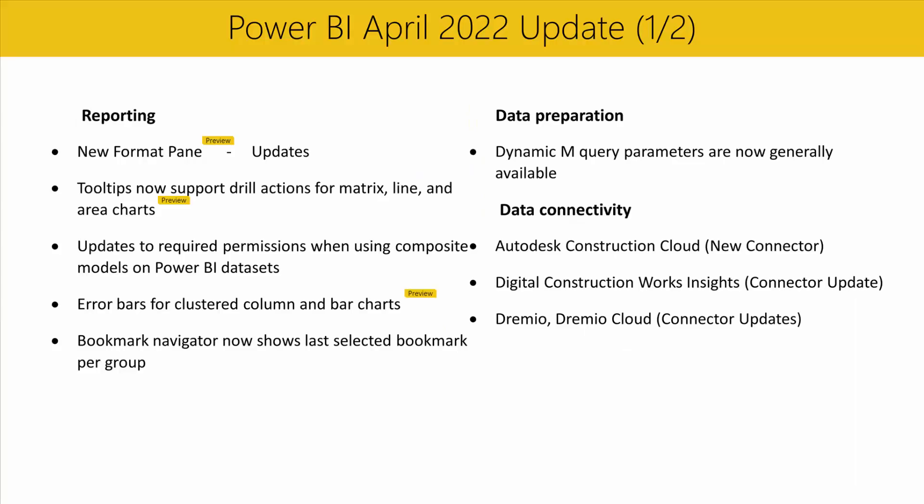In the data preparation section, we're excited to announce that dynamic M query parameters are now generally available. This feature allows report viewers to dynamically set the values for an M query parameter using filters or slicers, which is especially useful for query performance optimizations without sacrificing report interactivity. As part of the GA release, dynamic M query parameters are now compatible with the Q&A, decomposition tree, key influencers, and anomaly detection AI features.